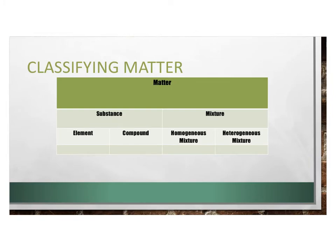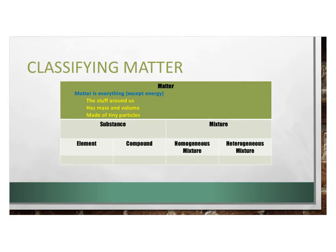Chemistry is the study of matter — describing it and talking about how matter changes. So, the first question we have is: what is matter? Matter is everything around us except for energy. We can think of it as the stuff around us — anything that has mass and volume, weighs something, takes up some space, or anything that is made of particles.